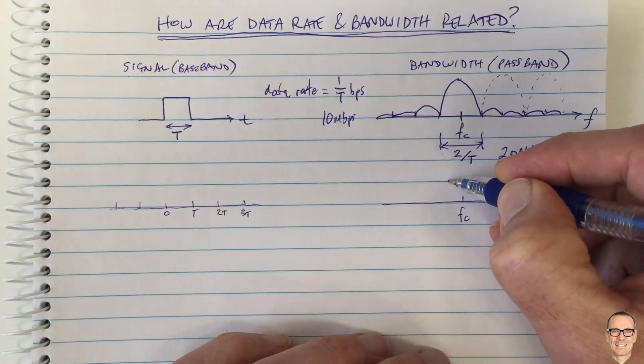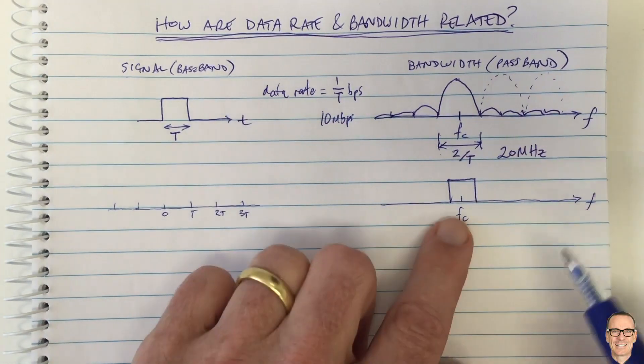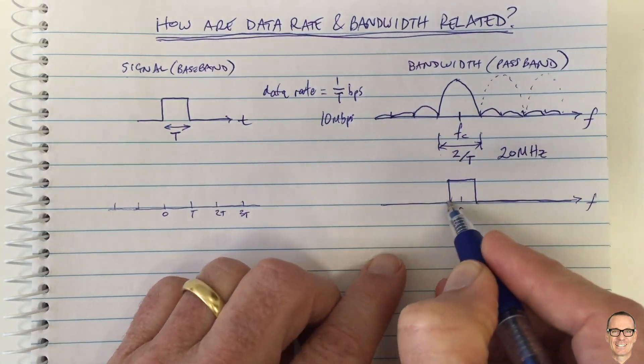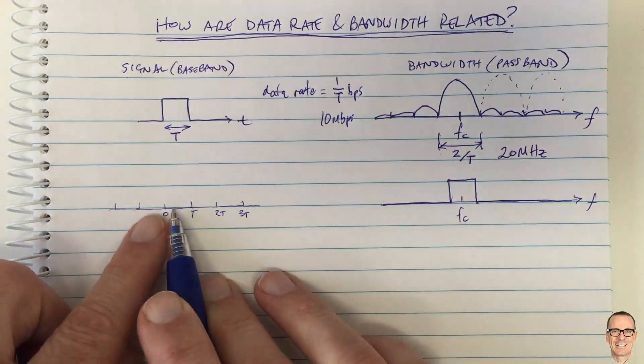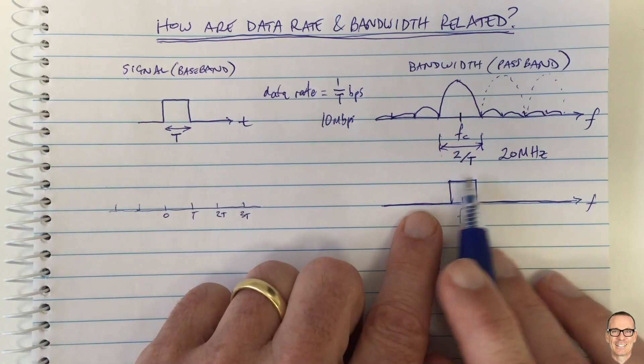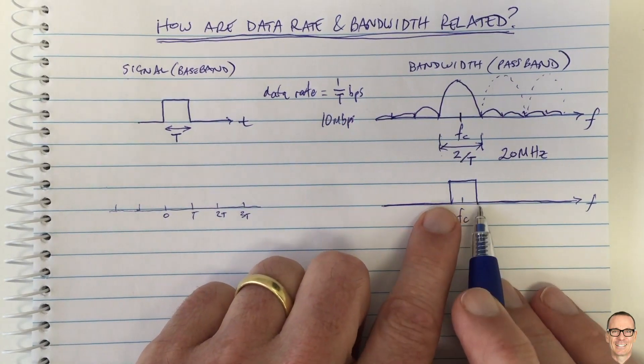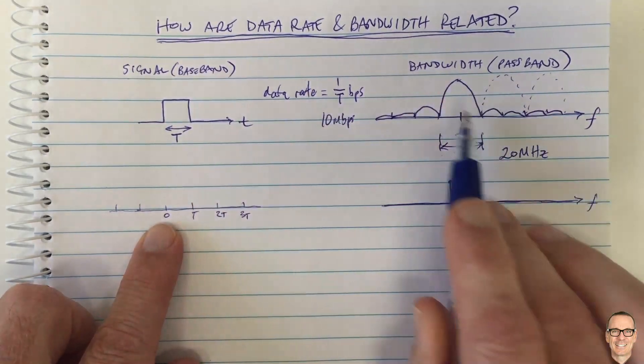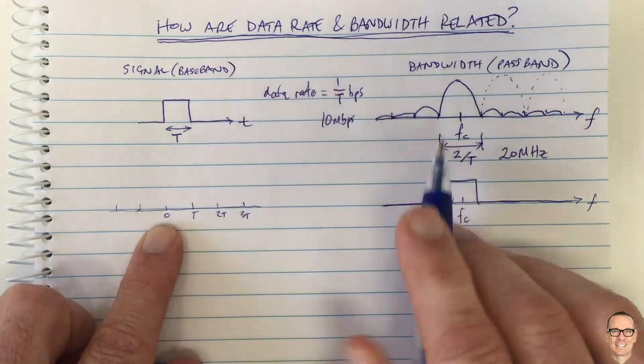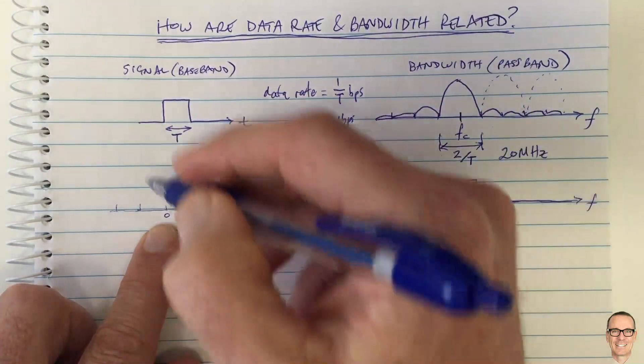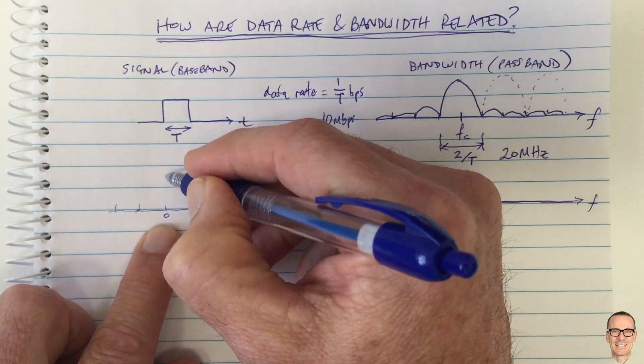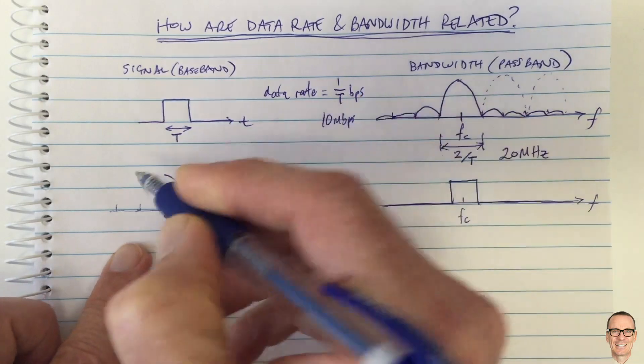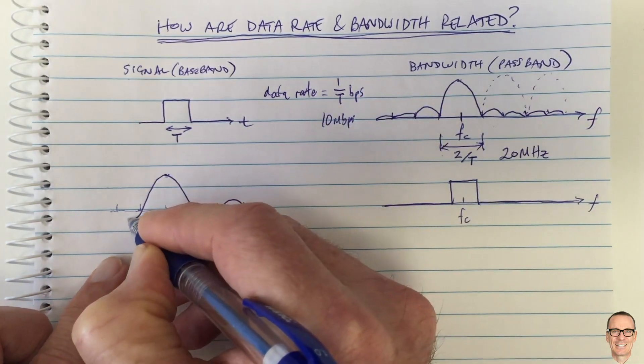Let's consider if we were to try to contain all of our frequencies within a certain range and have nothing outside. What would the time domain signal look like for this frequency domain requirement of absolute band limitation? Well, it turns out to be a signal which is also a sinc. I've drawn the magnitude over here in the frequency domain. I'll draw the sinc function over here and this is a function that would look like this in the time domain. This is because there's a duality property of Fourier transforms.